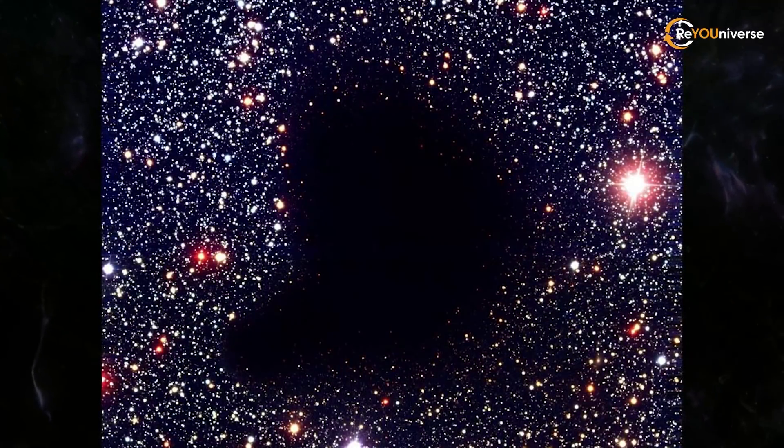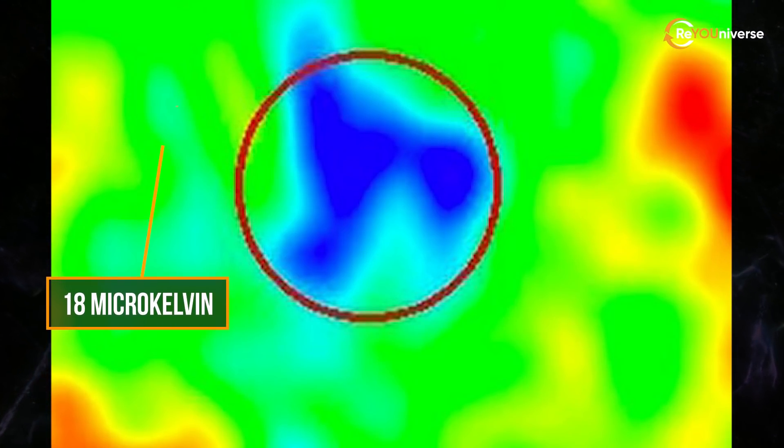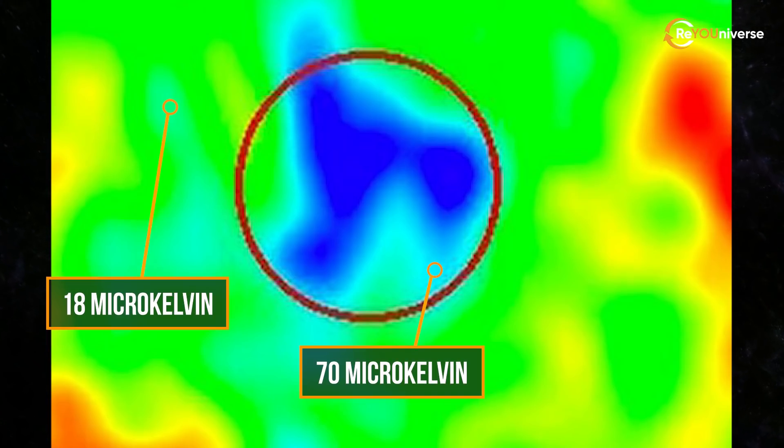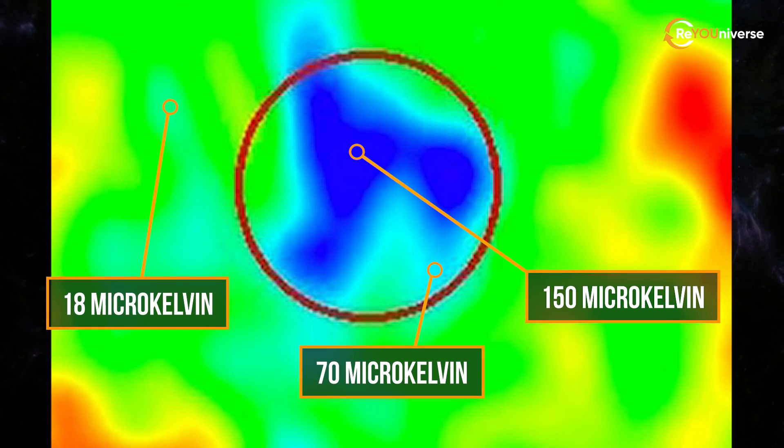First, this area is significantly colder. As we said, an average temperature deviation is 18 microkelvin. And here, it is 70 microkelvin, and can go as high as 150 microkelvin in the center.